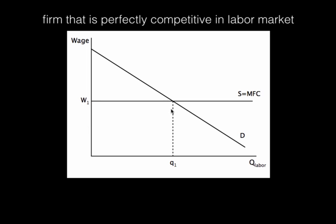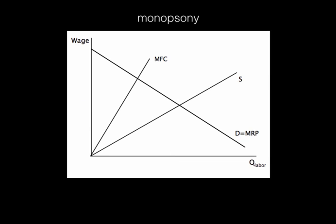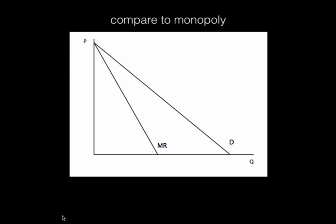Now let's relax one of our assumptions. We were assuming perfect competition in the labor market. Let's move to the extreme case of a monopsony. A monopoly is one seller; a monopsony is one buyer. As a firm, we are a buyer — we hire labor — so being the only buyer in the labor market is what's called a monopsony.